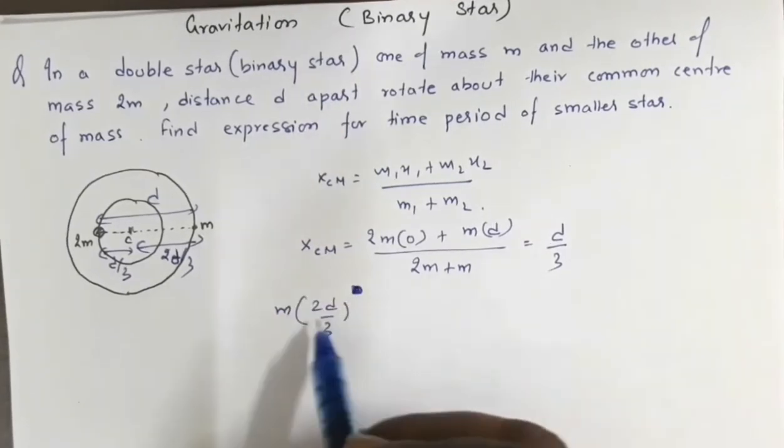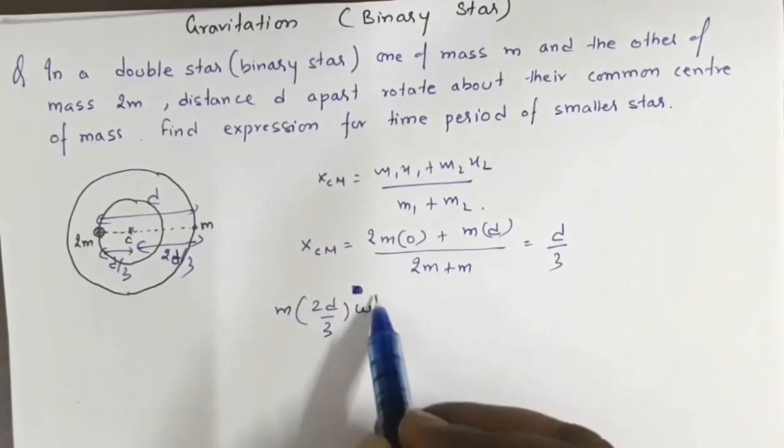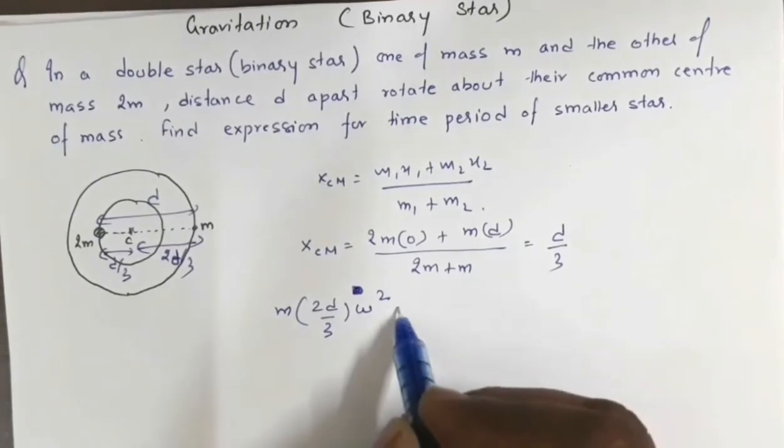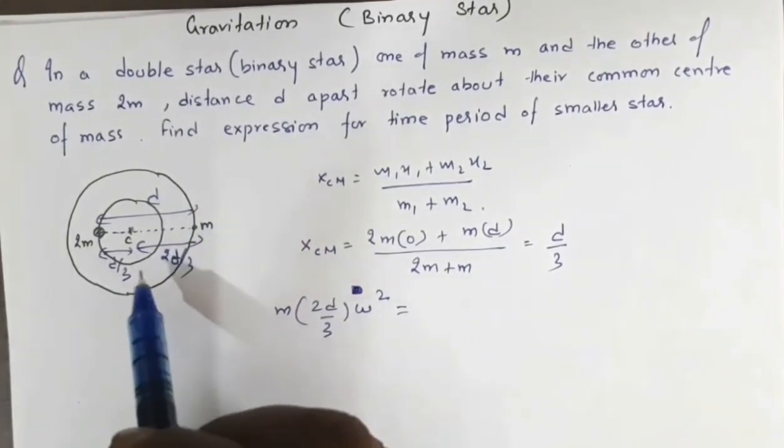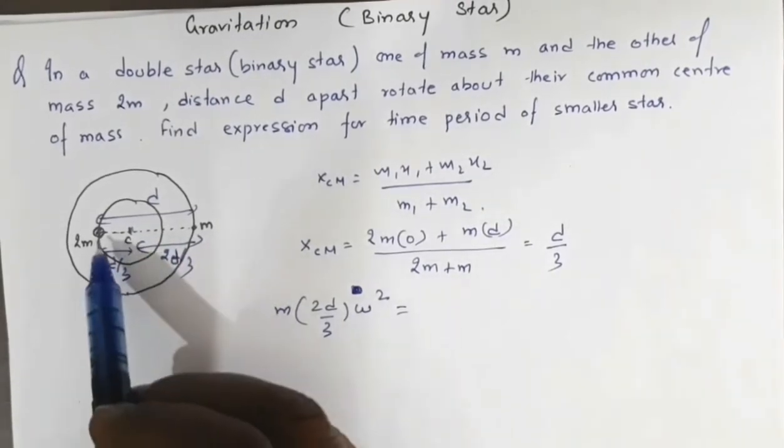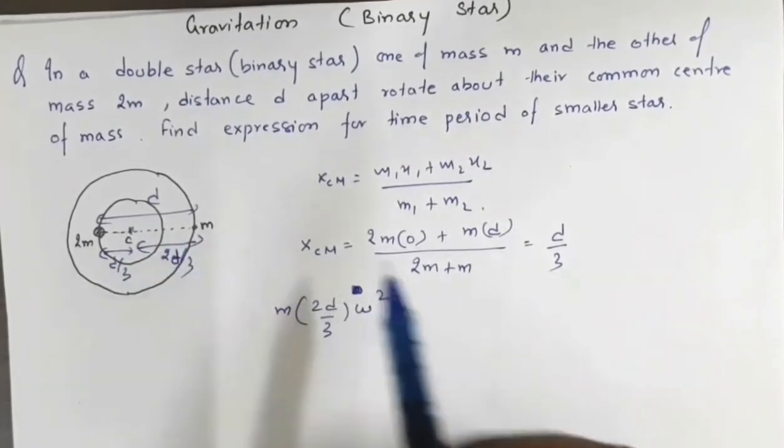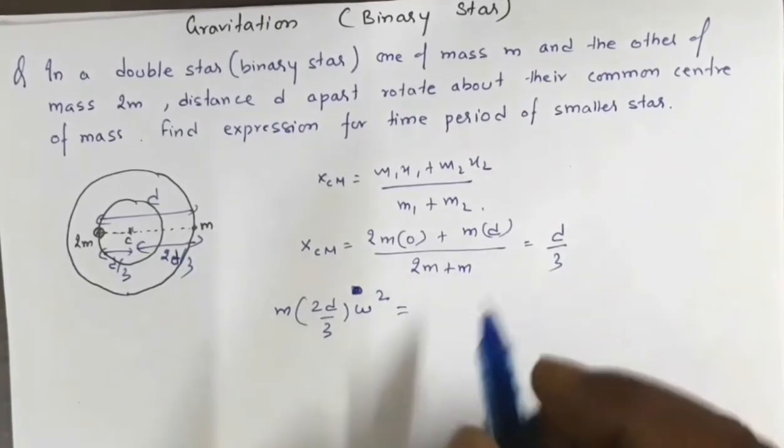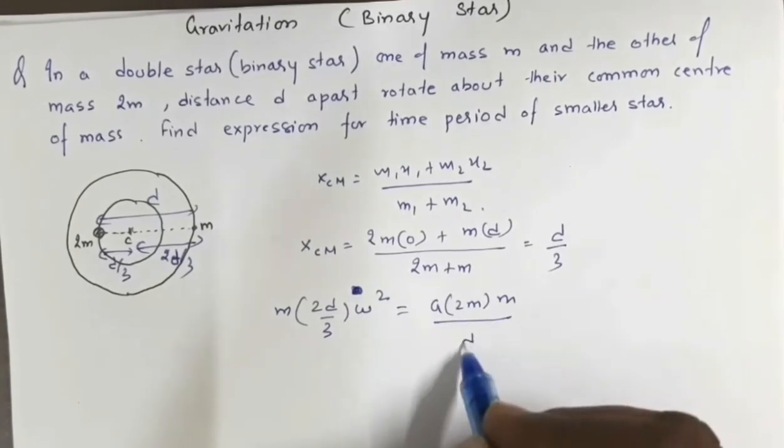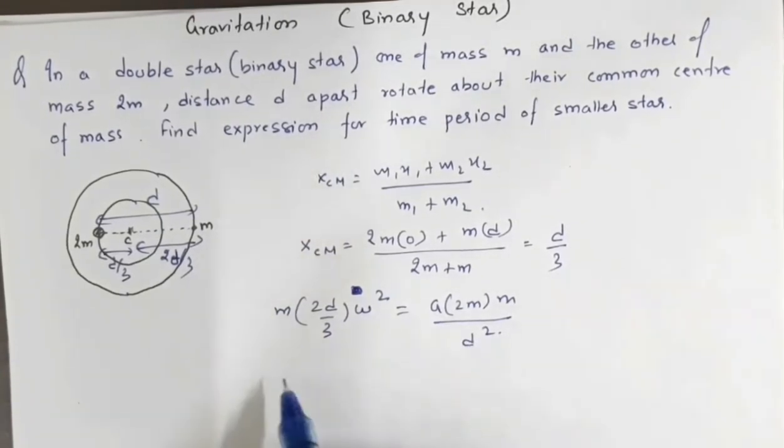The centripetal force acting on mass m is m·r·ω² where r = 2d/3. This centripetal force is provided by the gravitational force of attraction between the two masses, which is G·2m·m/d².